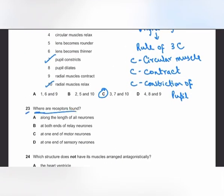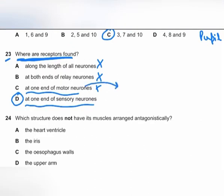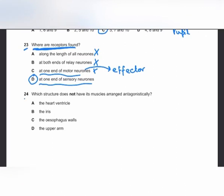MCQ number 23: where are receptors found? Receptors are found at one end of the sensory neuron, since the sensory neuron picks up the electrical impulse from the receptor. Receptors are not found along all neurons, nor at the ends of relay neurons or motor neurons. They are only at one end of the sensory neuron. Note: effectors are found at one end of the motor neuron.